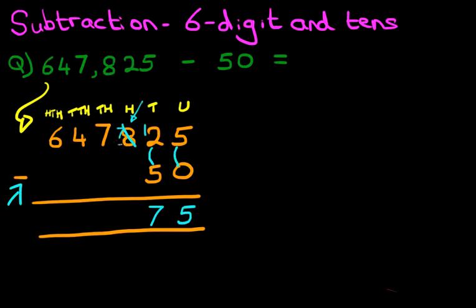As for the hundreds, well, we've got 7 minus nothing, so that remains 7. The thousands also is 7 minus nothing, remains 7. The ten thousands, we've got 4 minus nothing is 4. And the hundred thousands, we've got 6 minus 0 is 6.